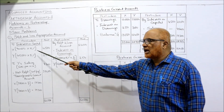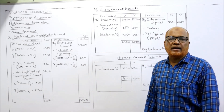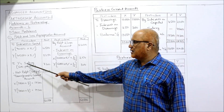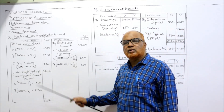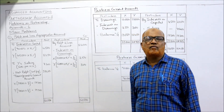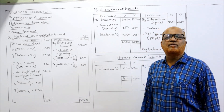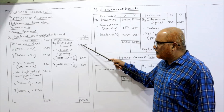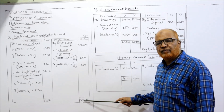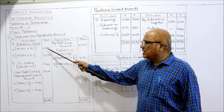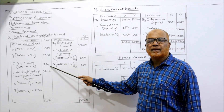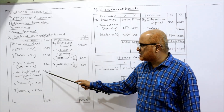Salary is payable only to Y — 600 per month × 12 = 7,200. That's all — only three adjustments: interest on capital, interest on drawings, and salary of Y. Now we find the divisible profit. Total credit side: 52,000 + 250 + 300 = 52,550. Subtract the debit items: 52,550 − 4,500 − 2,250 − 7,200. The divisible profit as the balancing figure is 38,600.